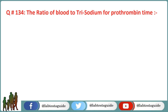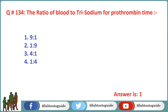Next question is 134: The ratio of blood to trisodium citrate for prothrombin time is? Option 1: 9 to 1. Option 2: 1 to 9. Option 3: 4 to 1. Option 4: 1 to 4. The correct answer is Option 1: 9 to 1.